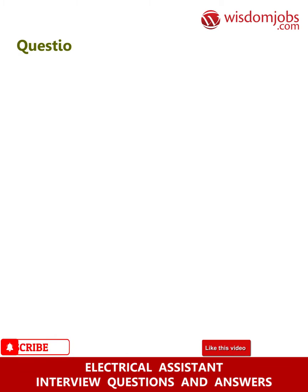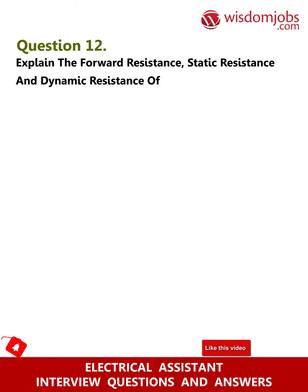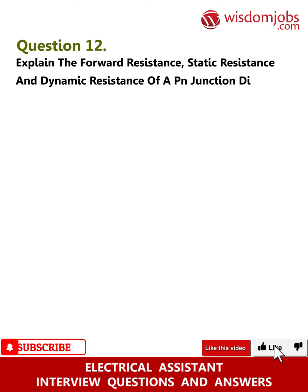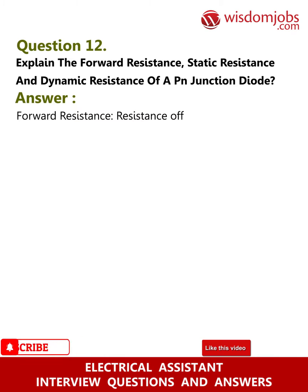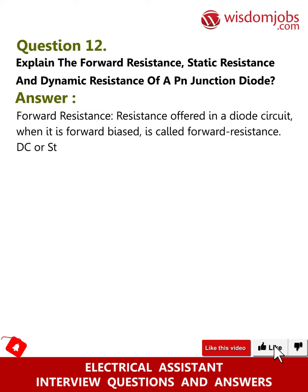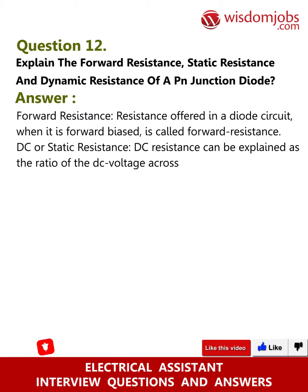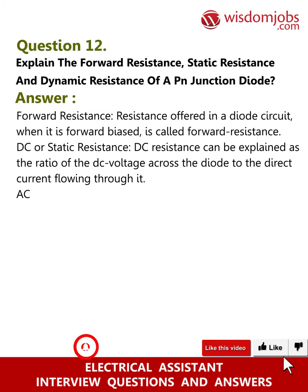Question 12: Explain the forward resistance, static resistance, and dynamic resistance of a p-n junction diode. Answer — Forward resistance: The resistance offered in a diode circuit when it is forward biased is called forward resistance. DC or static resistance can be explained as the ratio of the DC voltage across the diode to the direct current flowing through it.